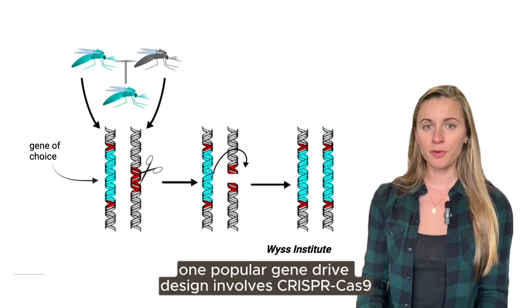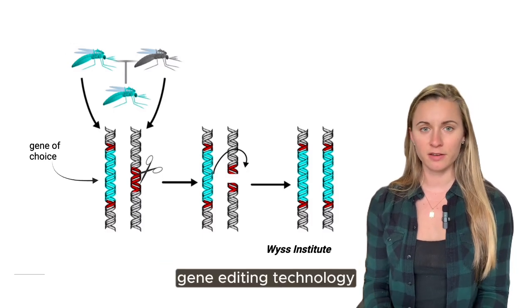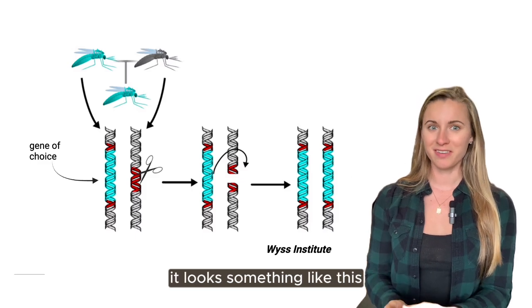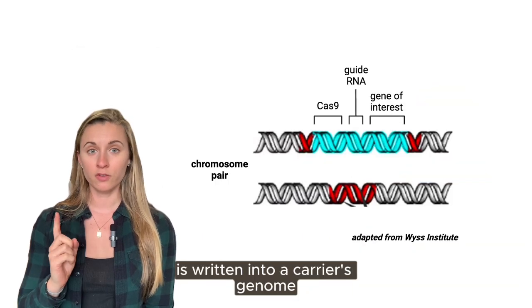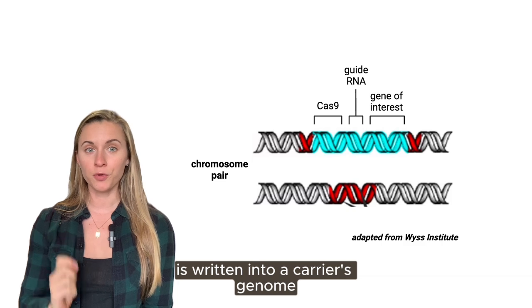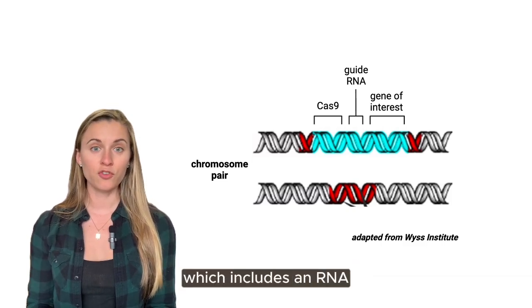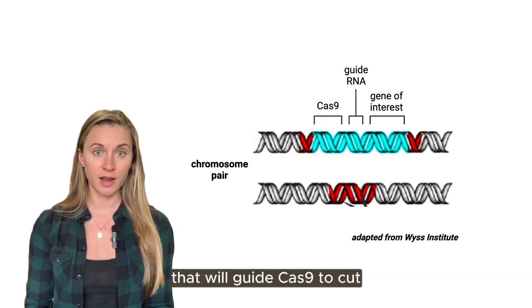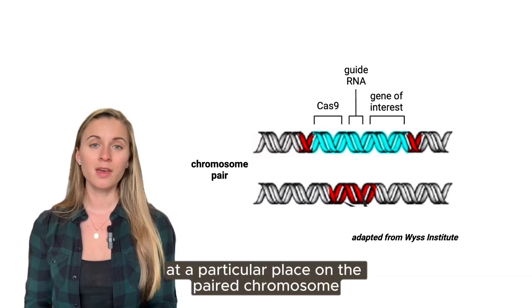One popular gene drive design involves CRISPR-Cas9 gene editing technology. It looks something like this: the gene to be spread through the population is written into a carrier's genome. Alongside it is a sequence encoding the CRISPR-Cas9 machinery, which includes an RNA that will guide Cas9 to cut at a particular place on the paired chromosome.